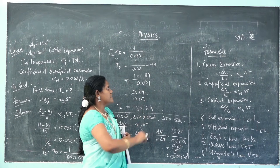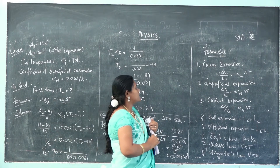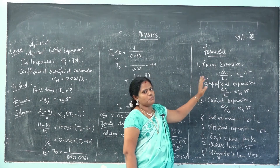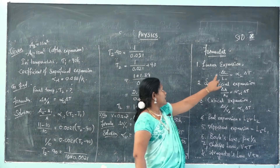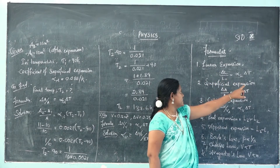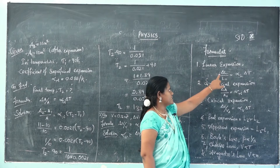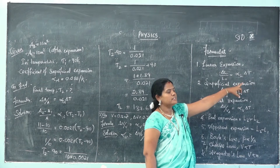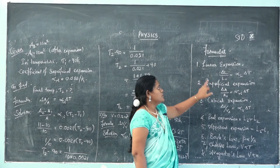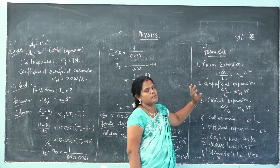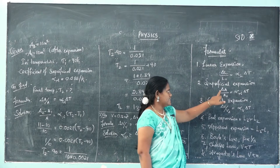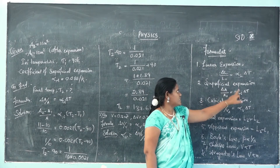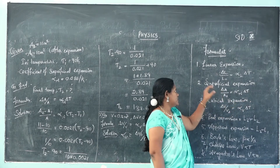There are three types of expansion: linear expansion, superficial expansion, and cubical expansion. Linear expansion means the length expands when heat is applied, so delta-L by L-naught equals alpha-L into delta-T. That is, change in length divided by original length equals the coefficient of linear expansion multiplied by the change in temperature. Superficial expansion is when area changes on heating: delta-A divided by original area equals the coefficient of superficial expansion into delta-T.